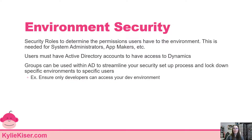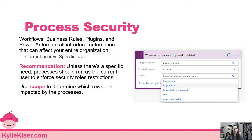One last thing to cover is security for your processes — business rules, plugins, classic workflows, and Power Automate modern flows. They all have a scope setting, which is a bit related to security. It determines when a process runs and what records it applies to. Generally I like to keep all of these at Organization scope, then use conditions within the process to streamline down to what's needed. It's worth asking: do you have different automation firing for sales users versus marketing users, or are all records treated the same?